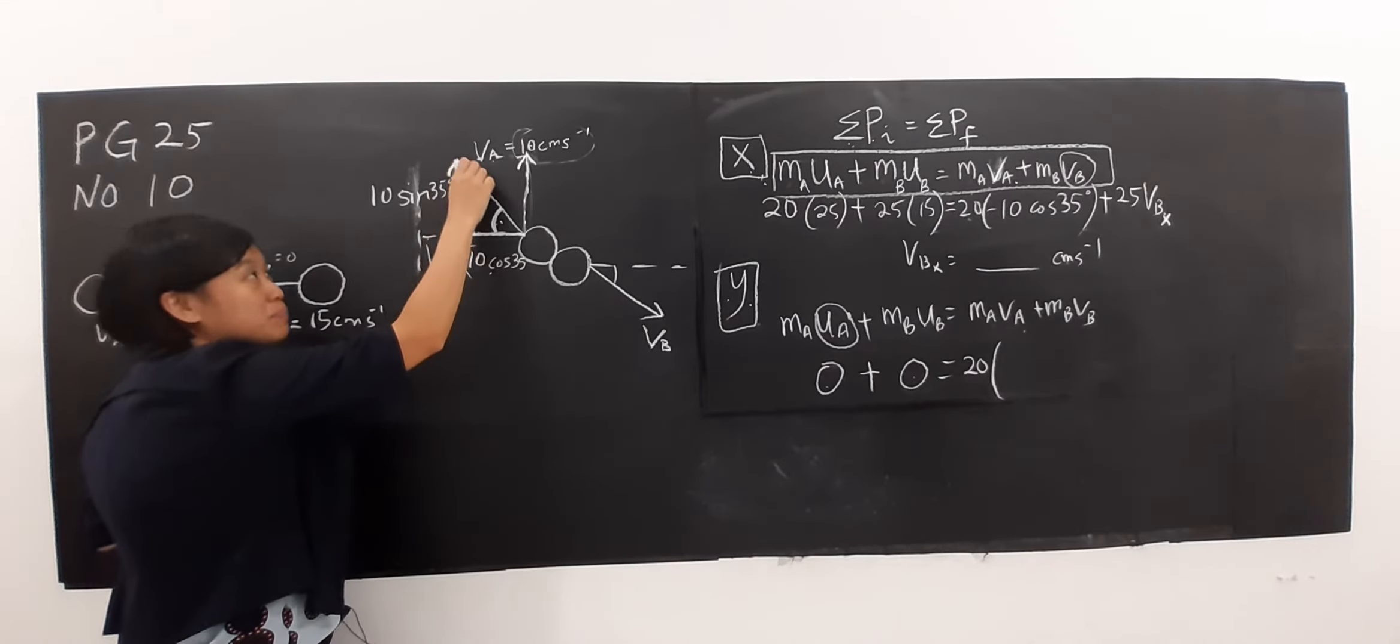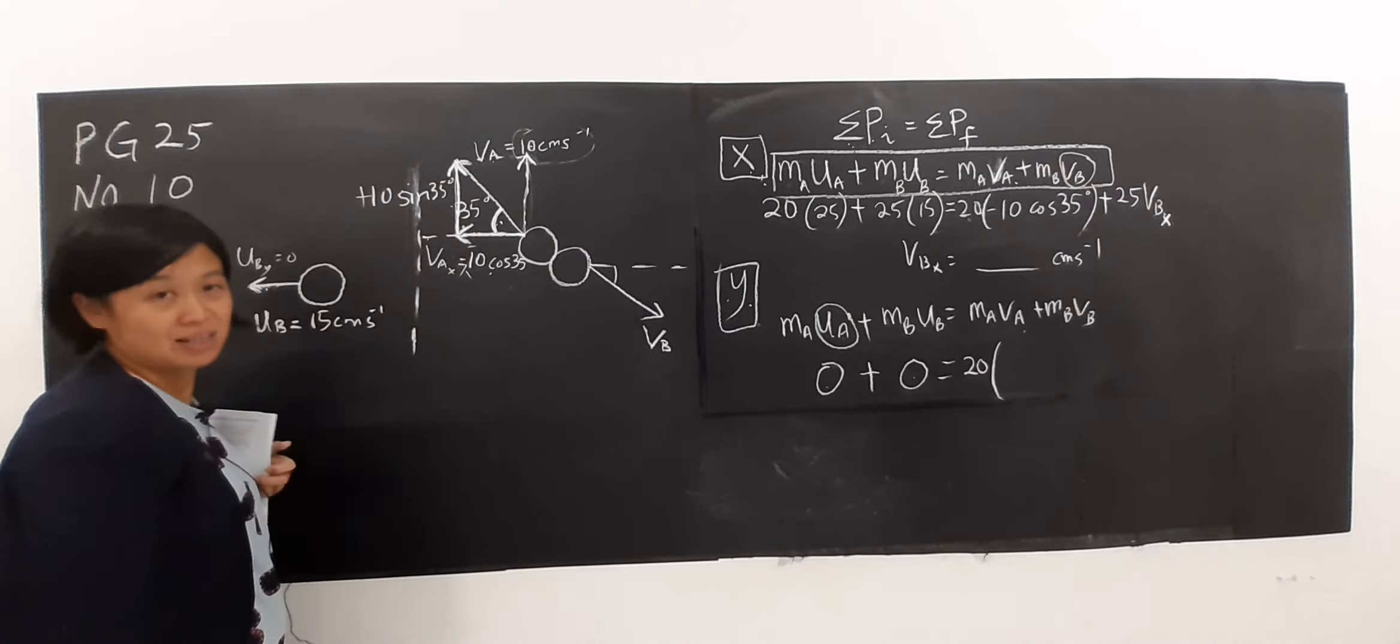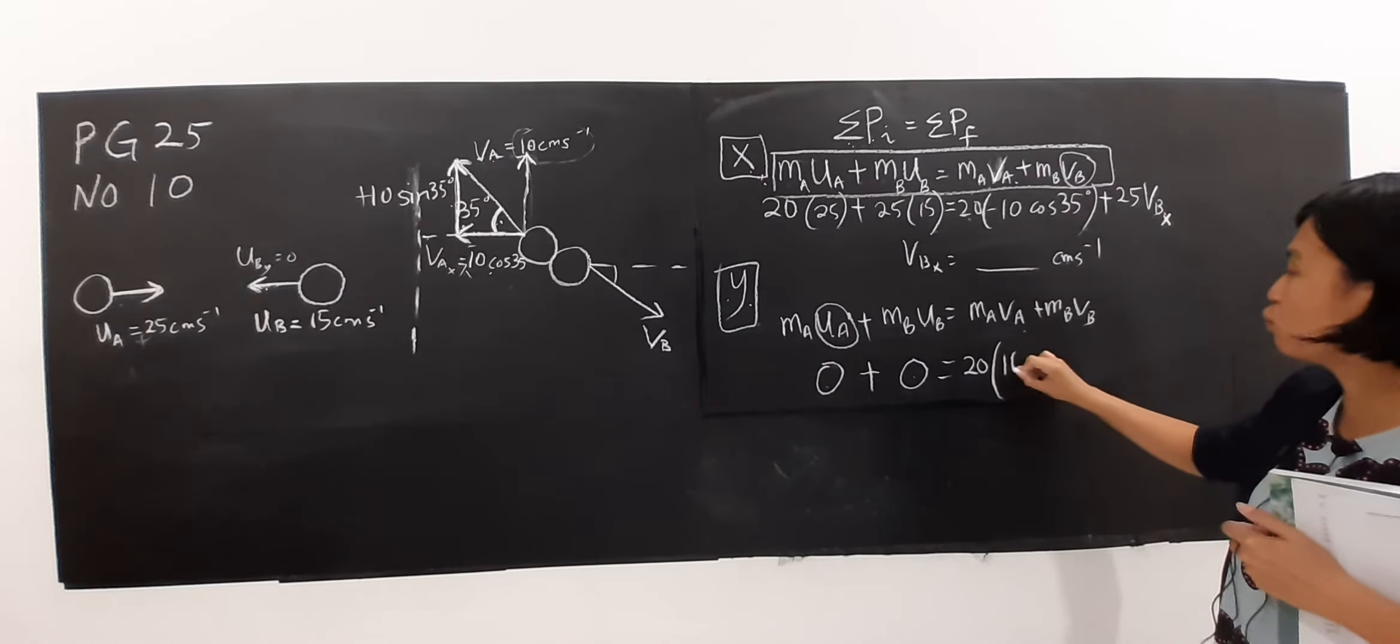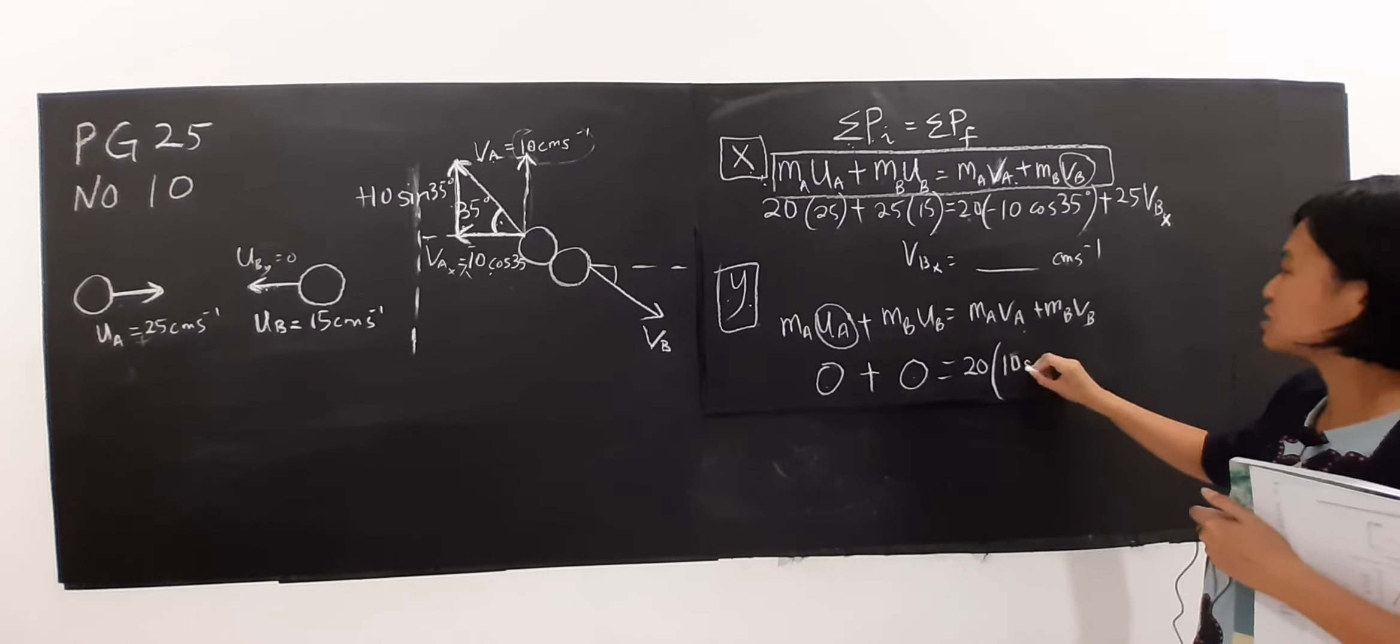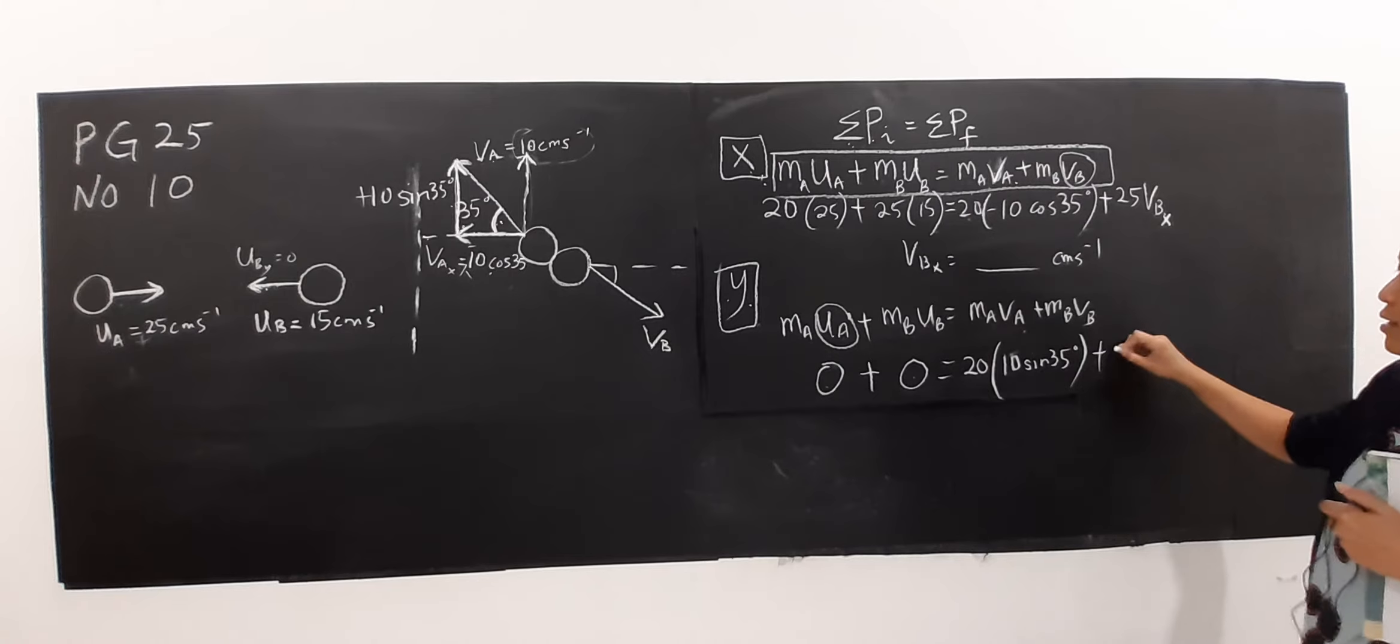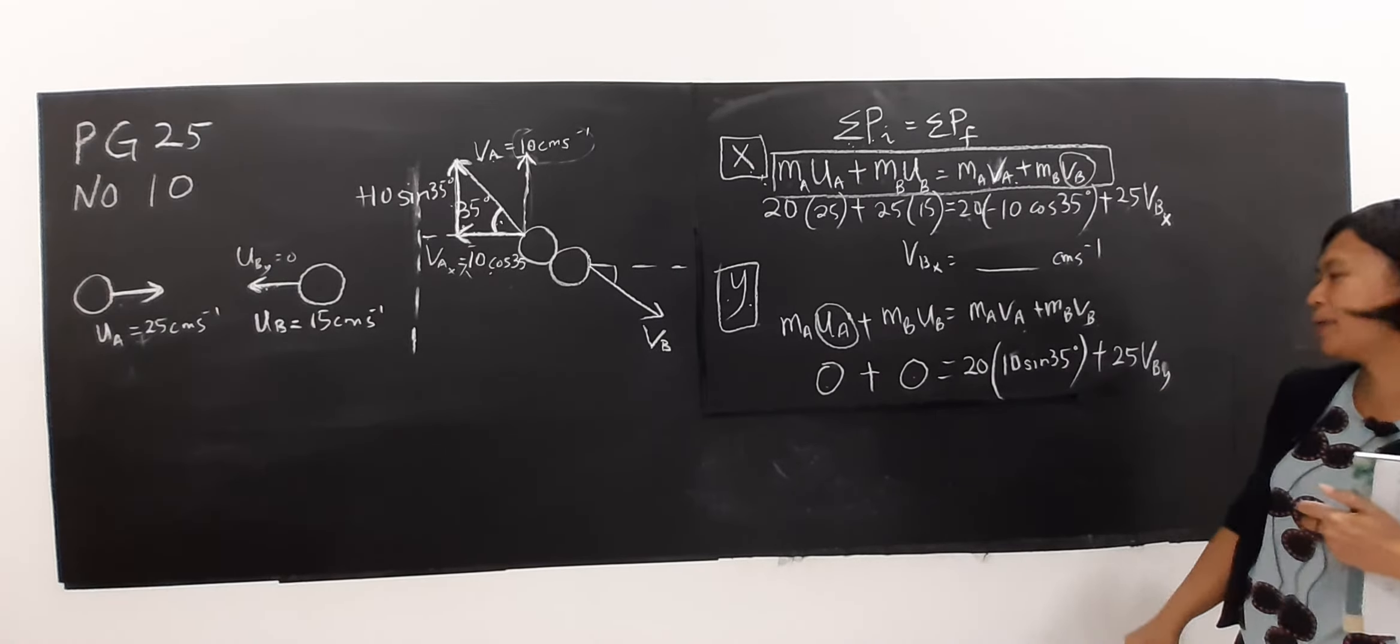If this component goes up, it's positive. So I have 10 sine 35, mass for B is 25, VBY I don't know so I treat it as unknown.